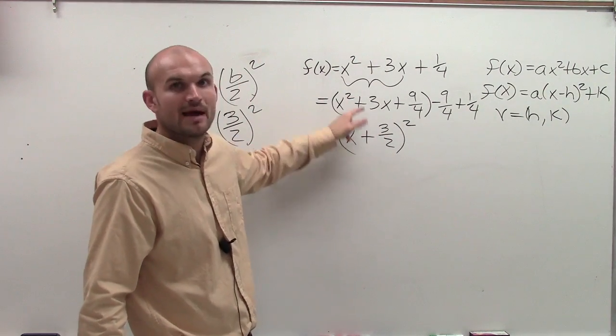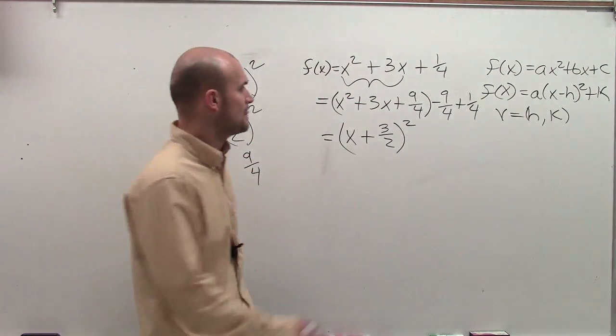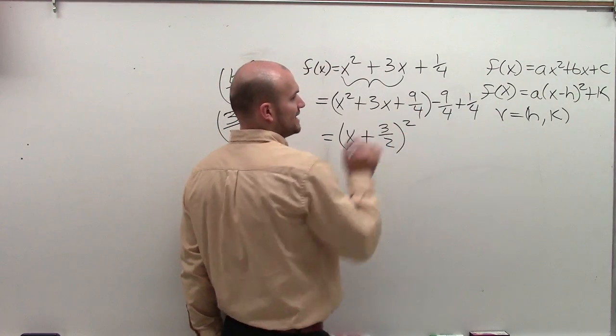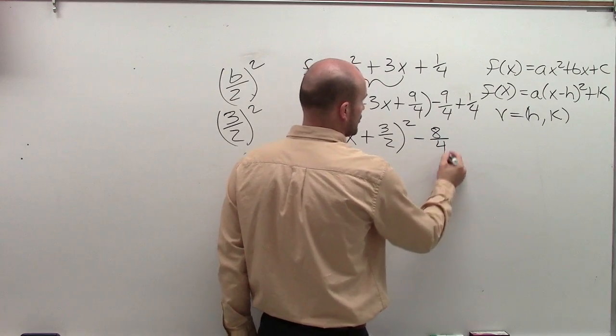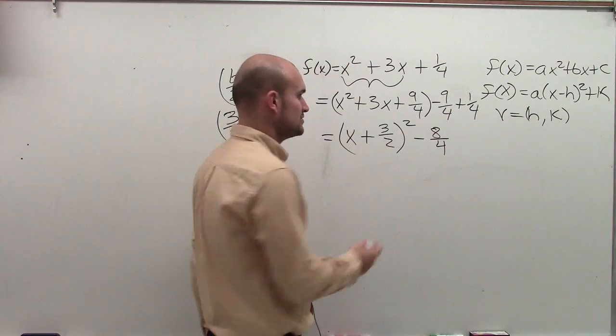Does 3 over 2 plus 3 over 2 add to 3? Yes, it does. So then I have negative 9 fourths plus 1 fourth, which is a negative 8 over 4, which we know reduces down to 2.